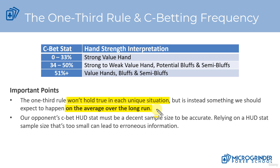The other thing with using the one-third rule and c-betting frequency — something I already touched on in this video — is HUD stats, and particularly HUD stats sample size. When we're looking at our opponent's c-betting stats, we need to make sure that we have a decent sample size of hands to be accurate.